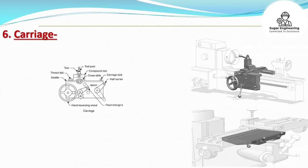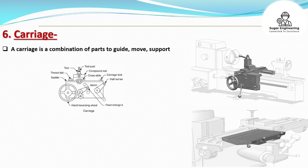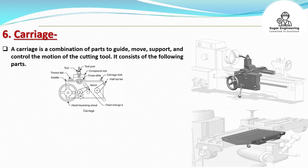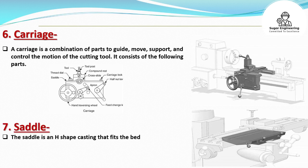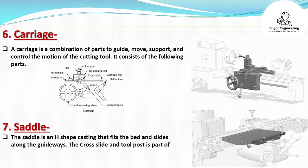A carriage is a combination of parts to guide, move, support, and control the motion of the cutting tool. The saddle is an H-shape casting that fits the bed and slides along the guideways. The cross slide and tool post are part of the saddle.